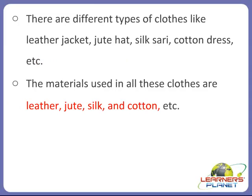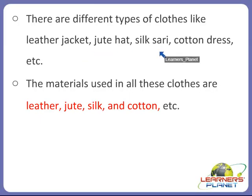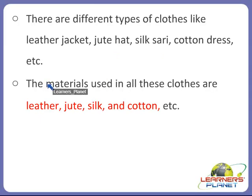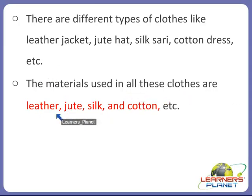Clothing protects against extreme weather conditions. Basically, we wear different types of clothes like leather jackets, jute hats, silk saris, and cotton dresses, depending upon the climate. So the materials used in all these clothes are leather, jute, silk, and cotton. There are different types of clothes, and different types of clothes are made up of different materials.